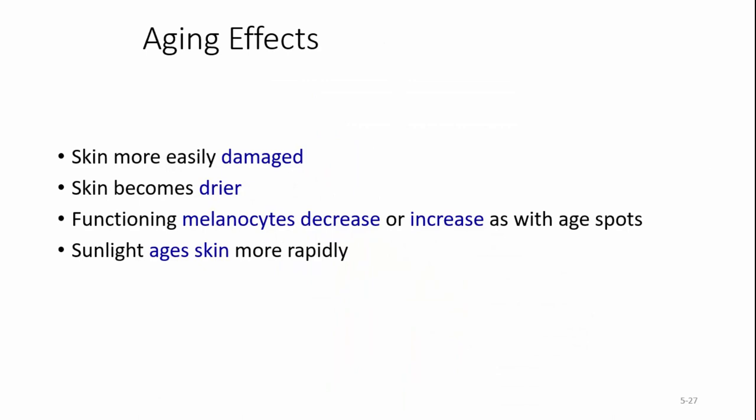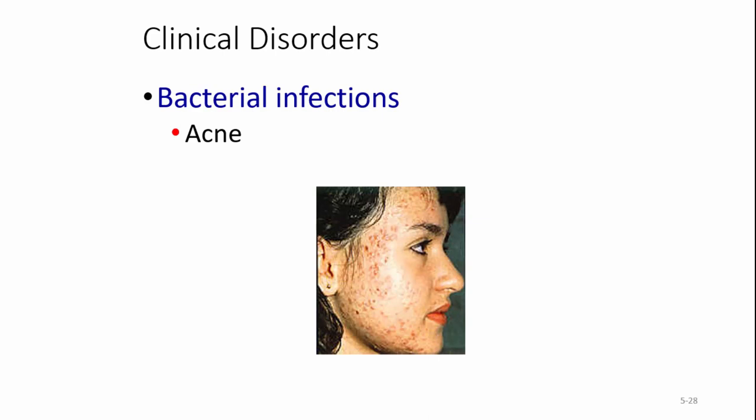Aging affects the skin — the skin can become more easily damaged, becomes drier, functioning melanocytes decrease or increase resulting in age spots, and sunlight ages skin more rapidly. For clinical disorders, we have bacterial infections such as acne, which is basically plugged sebaceous glands that can be exacerbated hormonally, but bacteria can get trapped in there as well.